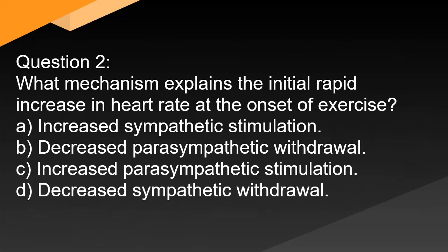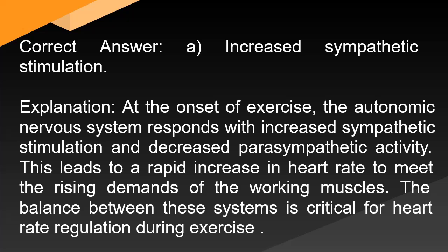Question 2: What mechanism explains the initial rapid increase in heart rate at the onset of exercise? A. Increased sympathetic stimulation. B. Decreased parasympathetic withdrawal. C. Increased parasympathetic stimulation. D. Decreased sympathetic withdrawal. Correct answer: A. Increased sympathetic stimulation. At the onset of exercise, the autonomic nervous system responds with increased sympathetic stimulation and decreased parasympathetic activity. This leads to a rapid increase in heart rate to meet the rising demands of the working muscles. The balance between these systems is critical for heart rate regulation during exercise.